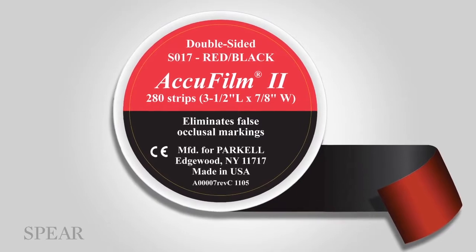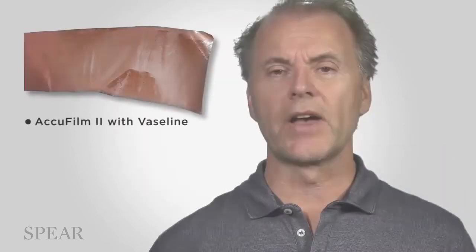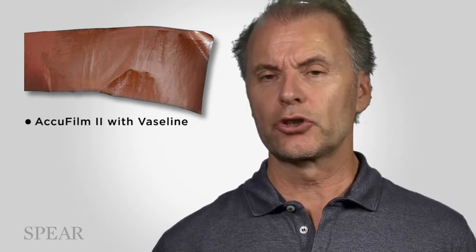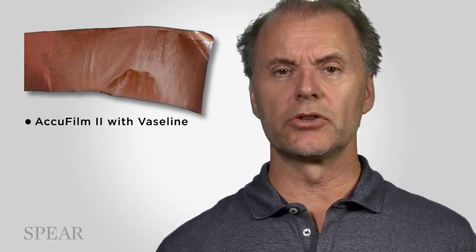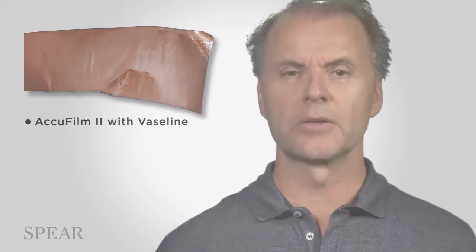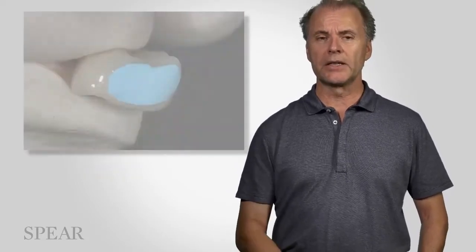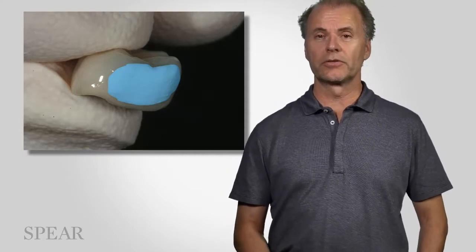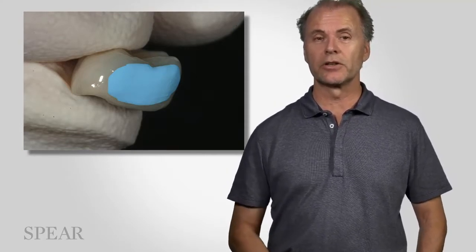To get it to mark on glazed porcelain though, I take a little Vaseline on my rubber gloves, wipe it onto the articulating paper, and then it transfers the mark a little bit easier to the interproximal. The other material I use that I find even more effective than the AccuFilm 2 is also AccuFilm, but it's AccuFilm 4. You paint on the surface. It's like a white-out material for those of you who remember typewriters and the white-out material.